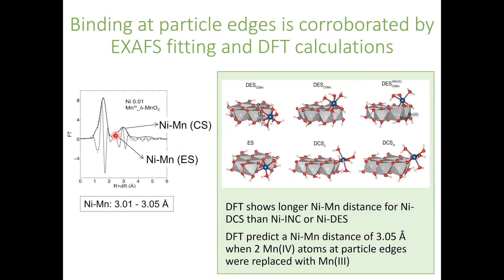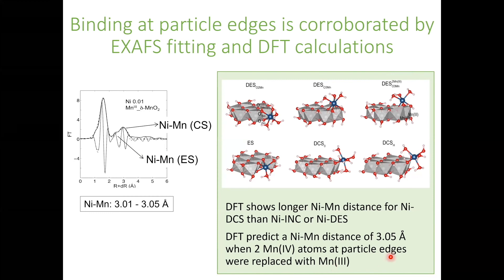We went to DFT because there is some ambiguity in the interpretation of the EXAFS. We used small clusters containing seven manganese octahedra and geometry-optimized nickel surface complexes in a range of different geometries and protonations. We found that nickel corner-sharing complexes at the particle edges have similar interatomic distances to those at the vacancy sites, but when nickel is bound to the particle edges near a Mn(III) octahedra instead of a Mn(IV) octahedra, we predict a 3.05 Å interatomic distance. The longer interatomic distance identified in EXAFS was thus supported by our DFT calculations.